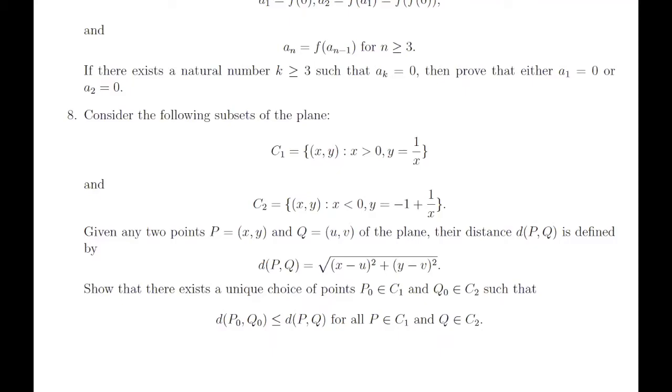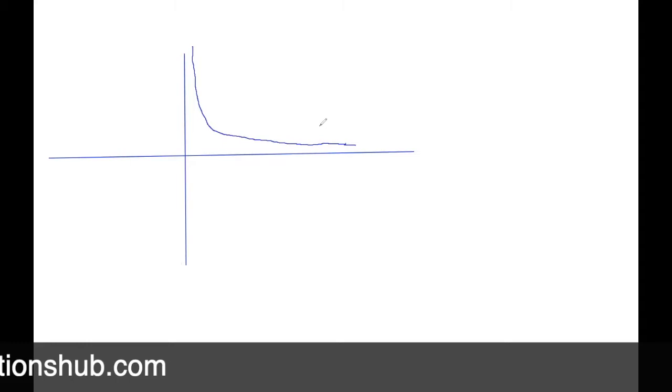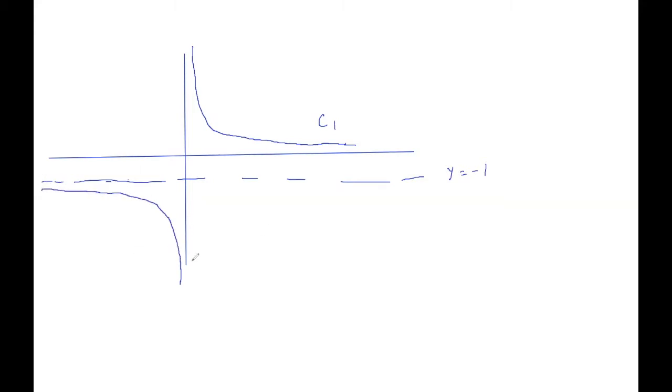So let's see how we can do this. So if you see that C1 is nothing but this graph, so this is C1, and C2 is nothing but, this is the line y equals negative 1, and C2 looks something like this. This is C2.